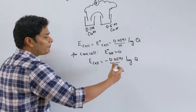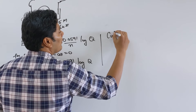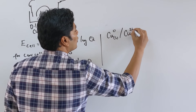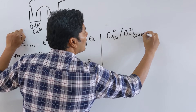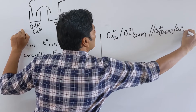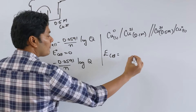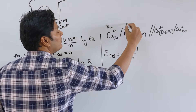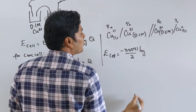For example, they give you the cell: Cu(s) | Cu²⁺(0.1 M) ‖ Cu²⁺(0.5 M) | Cu(s). Writing the Nernst equation: E_cell = −0.0591/2 × log([Cu²⁺]_product / [Cu²⁺]_reactant) = −0.0591/2 × log(0.1/0.5). The anode side (0.1 M) is the product concentration and the cathode side (0.5 M) is the reactant concentration.